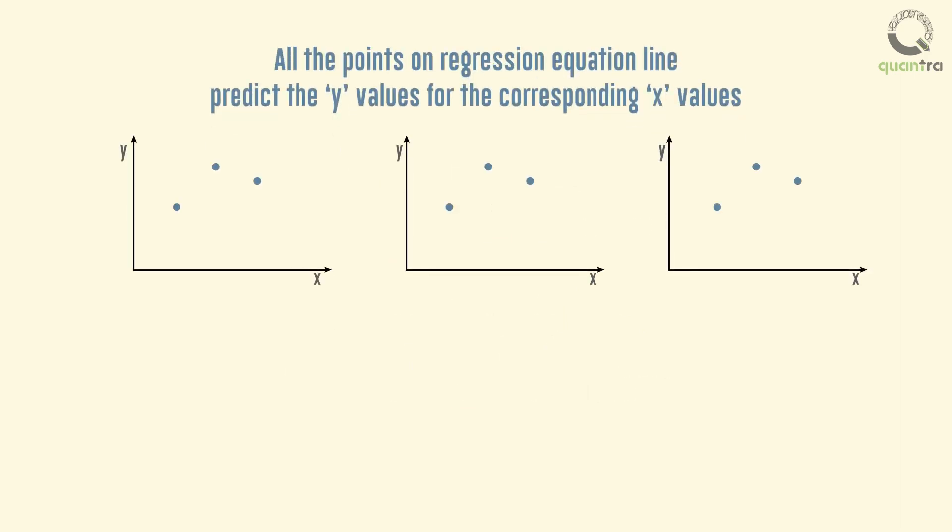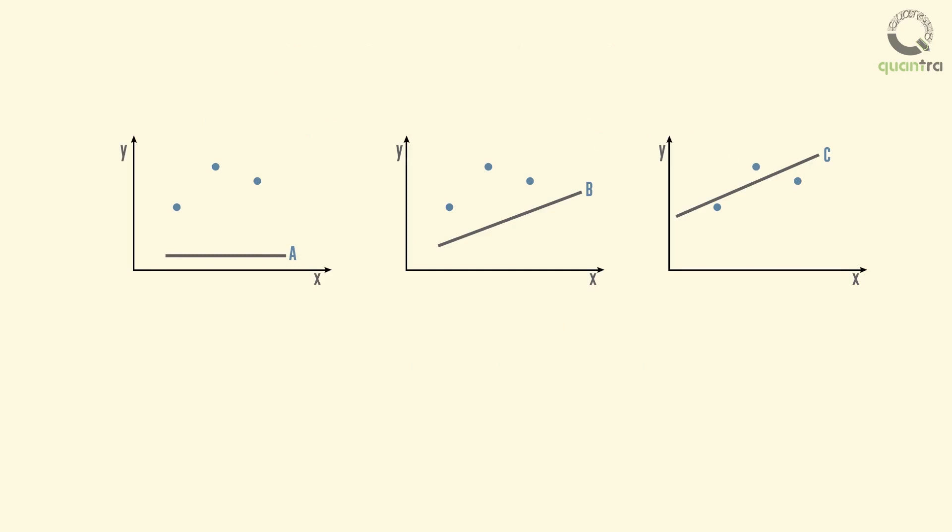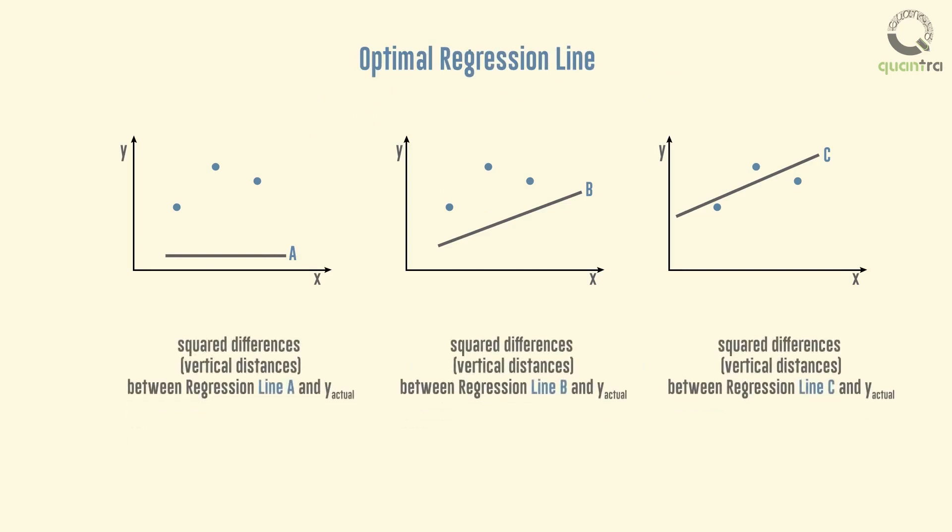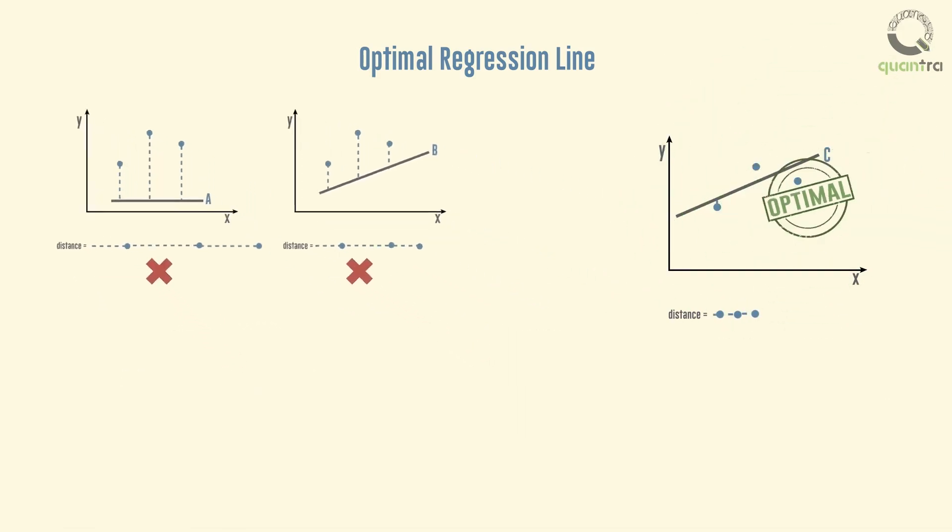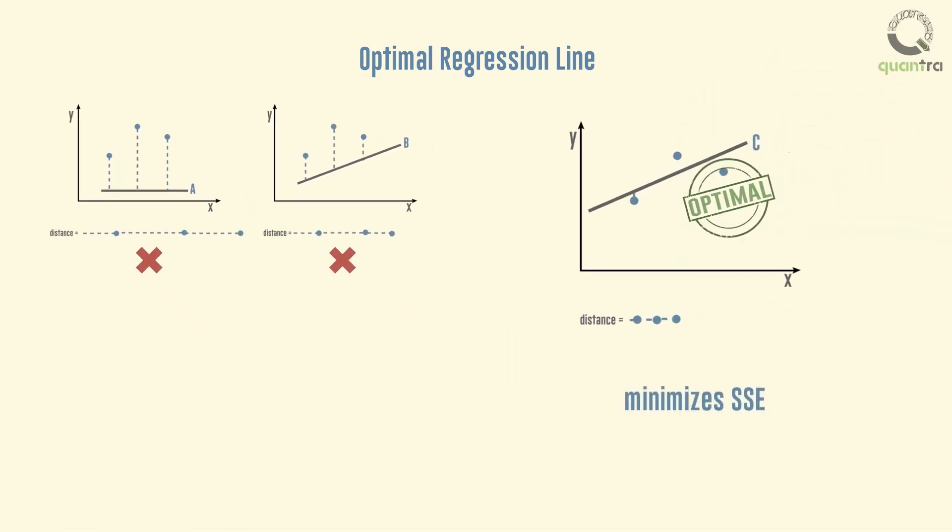All the points on the regression equation line predict the y values for the corresponding x values. However, the optimal regression line is the one for which the sum of the square differences, or the vertical distances, or the sum of squared errors (SSE), between the y values predicted by the regression equation and the actual y values is minimal. Thus, the regression line minimizes the SSE.